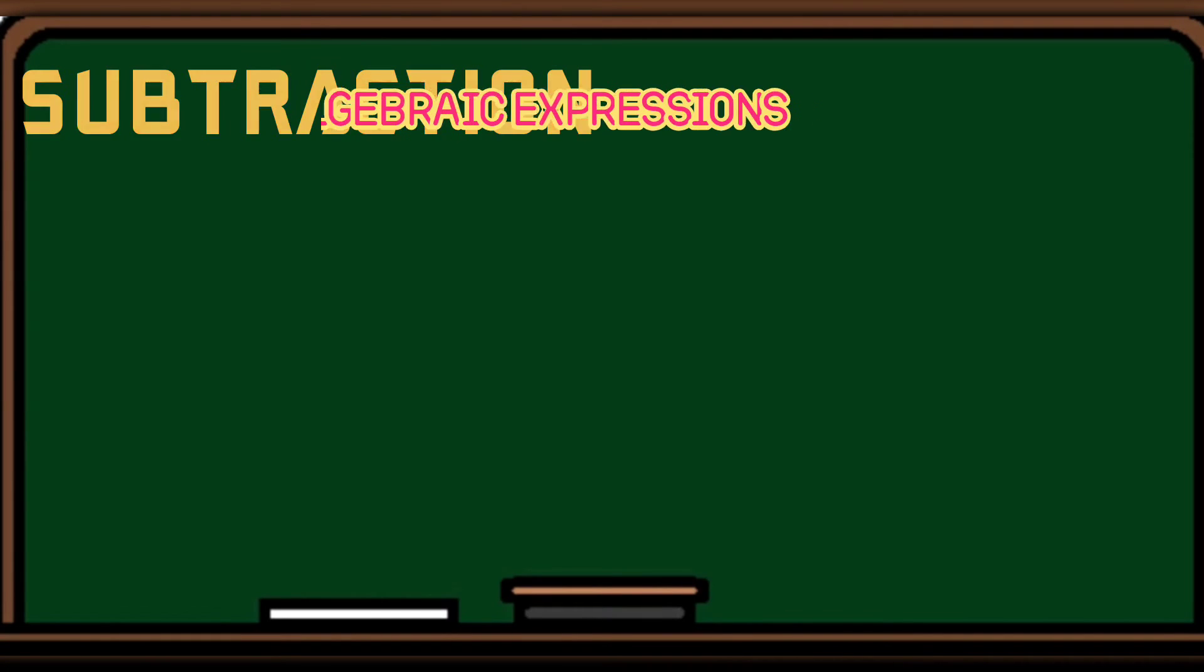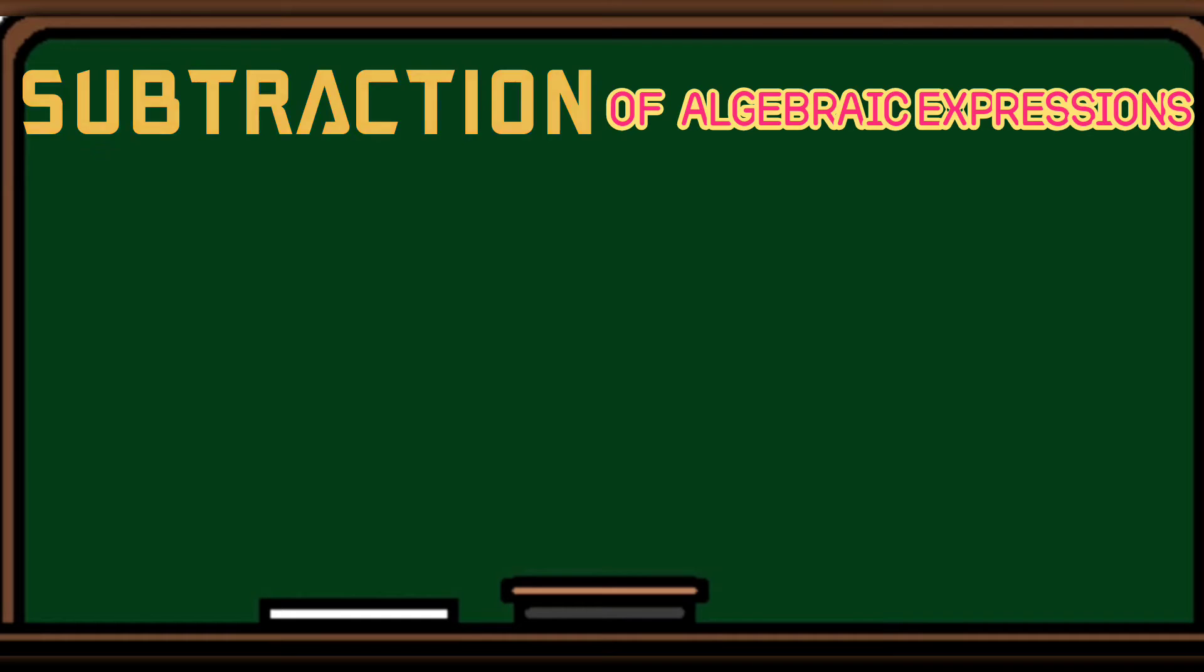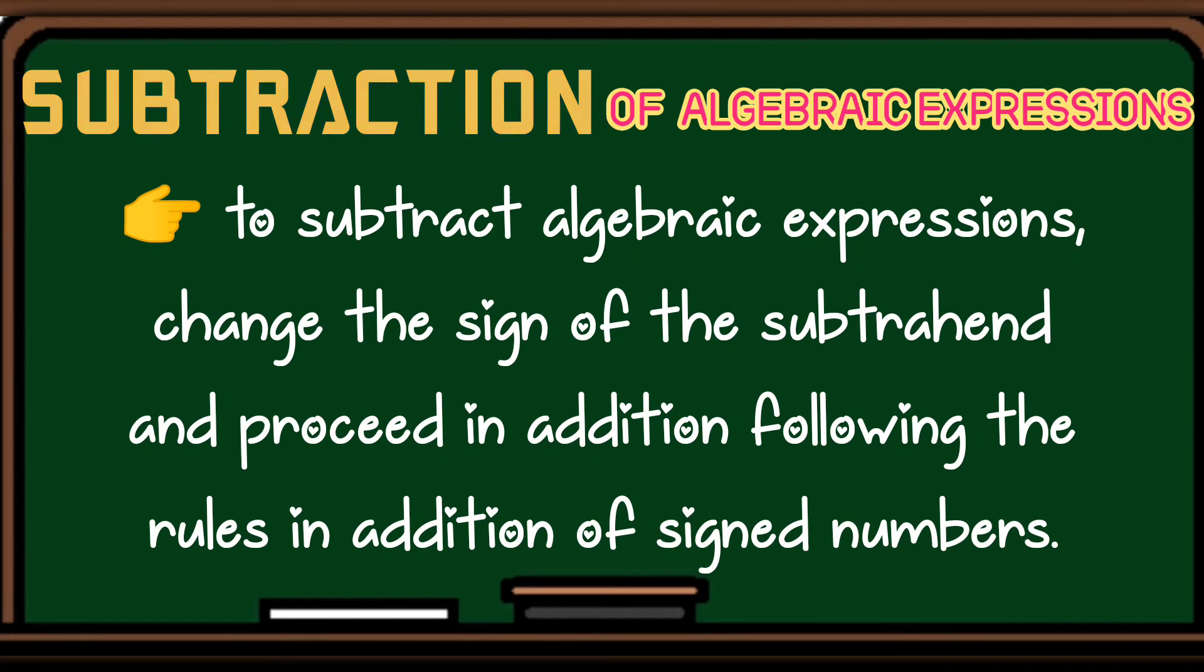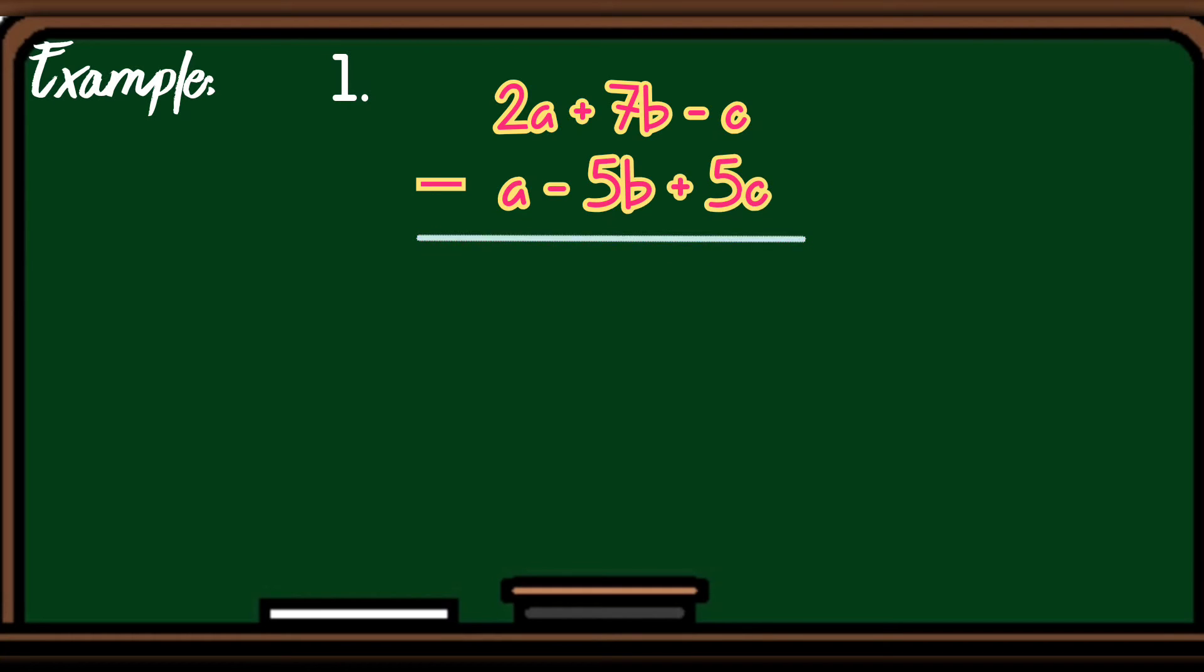Next, subtractions of algebraic expressions. To subtract algebraic expressions, change the sign of the subtrahend, and proceed in addition, following the rules in addition of signed numbers. Example, 2a plus 7b minus c, subtracted by a minus 5b plus 5c.